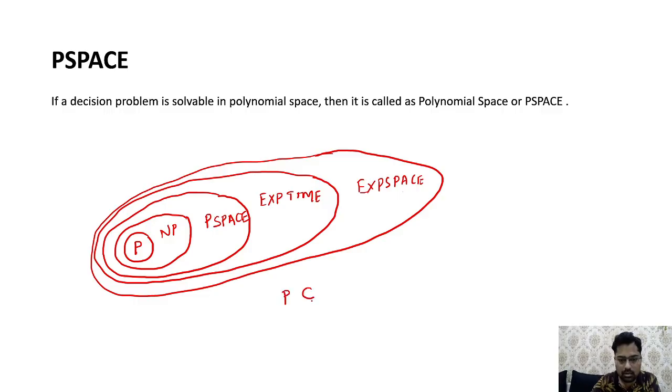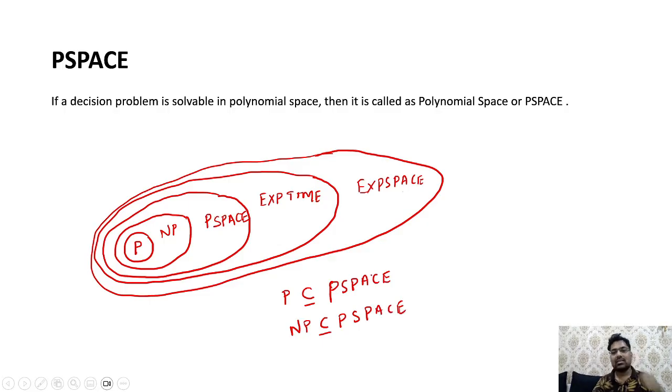Sometimes we are also writing in this order. P is a subset of PSPACE and NP is also subset of PSPACE. If an algorithm is taking polynomial space while completing that one, we will be saying the space complexity of the algorithm is PSPACE means polynomial in space.